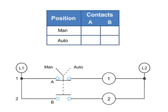Thus, if the selector switch is in the MAN position, A is X or closed, and B is 0 or open. When the switch position is set to AUTO, A is 0 or open, and B is X or closed.